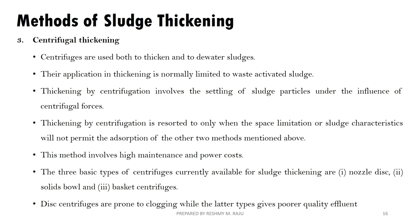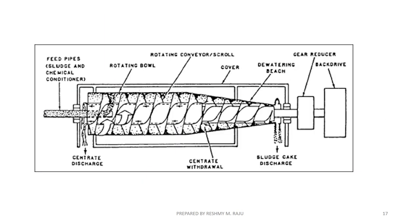The third method is Centrifugal Thickening. This method is applied particularly to activated sludge. Centrifugal forces are applied to separate the sludge. Disc centrifuges can be used with some consideration for clogging. A solid bowl centrifugal thickening configuration is commonly used, as shown in this figure.